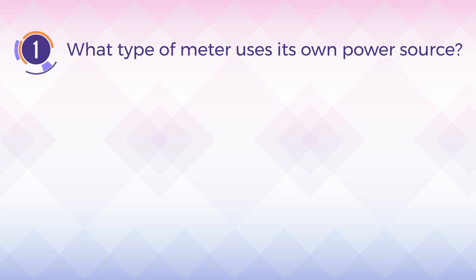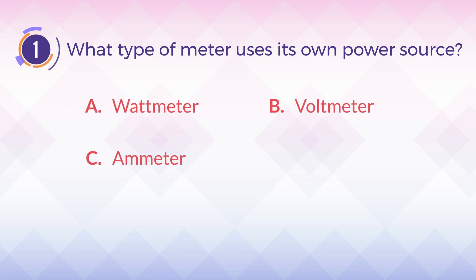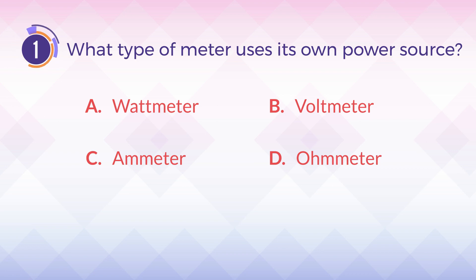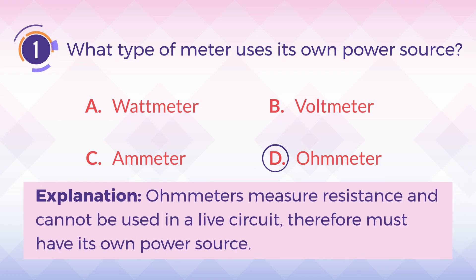Number one: what type of meter uses its own power source? A) watt meter, B) voltmeter, C) ammeter, D) ohmmeter. The correct answer is D) ohmmeter.